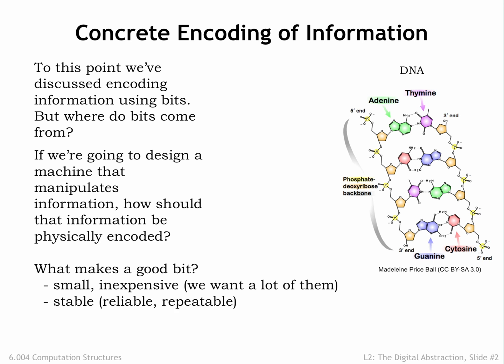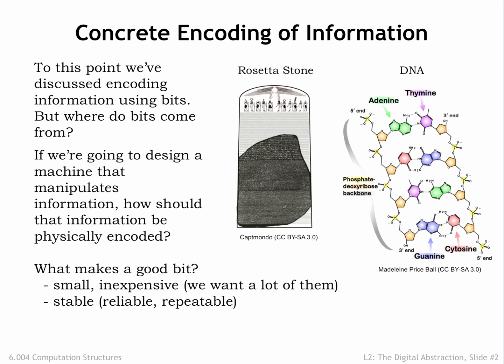We'd certainly like our bits to be stable over long periods of time — once a zero, always a zero. The Rosetta Stone, shown here as part of its original tablet containing a decree from the Egyptian king Ptolemy V, was created in 196 BC and encoded the information needed for archaeologists to start reliably deciphering Egyptian hieroglyphics almost 2,000 years later.